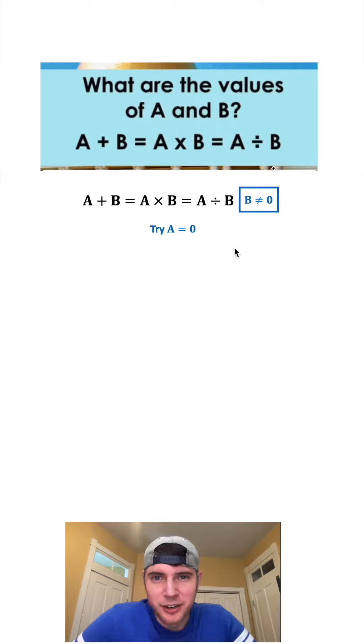Next let's try A equal to zero. Let's look at these two right here. Plug in zero for both of these A's. Zero plus B is equal to B and zero times B is equal to zero. So we have B equal to zero but we said earlier B cannot equal zero so we have a contradiction. That means that A cannot equal zero and we can put a box around that.